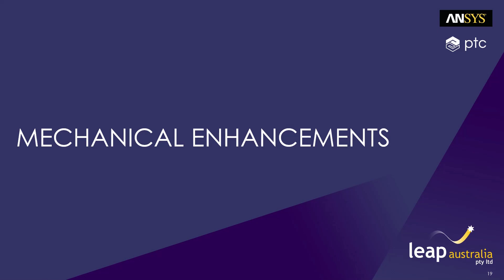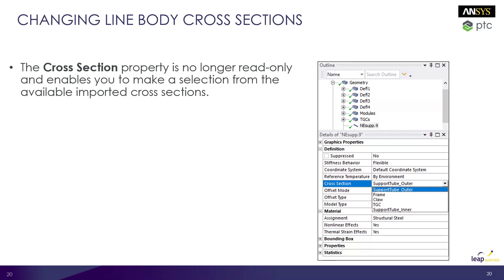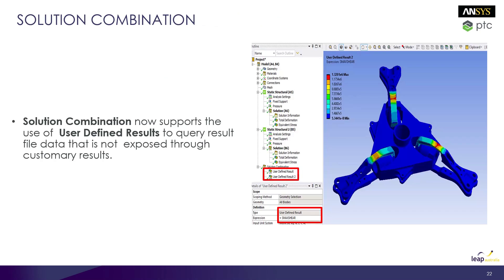Moving on to enhancements within the Mechanical application. In previous releases, the cross-section property for line bodies was read-only. Starting with this release, users can now select any available cross-section and assign it to the line body. Those who use solution combination would have previously noted that user-defined results were not available, but in R3, users can now use user-defined results to query results in the file data that are not exposed as a standard result.